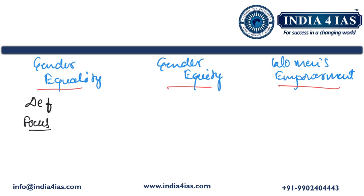Women's empowerment focuses on increasing women's agency and decision-making capacity. Examples: for gender equality — equal pay for equal work across genders. For gender equity — paternity and maternity leaves, which address the different needs of mothers and fathers. For women's empowerment — providing women access to education, healthcare, and employment opportunities.